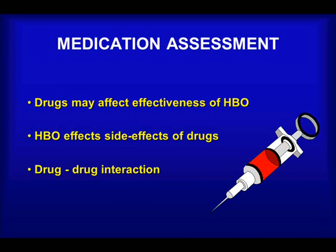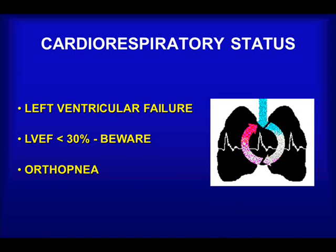Medication considerations. Medication may have a significant impact on HBO therapy. There are a range of decongestants that may interfere with circulation. Anticancer agents may even precipitate pulmonary fibrosis or cardiac toxicity. Accordingly, this is an important part of the assessment, and one needs to be familiar with drug-drug interactions with HBO and to look for them. Lastly, cardiorespiratory status. Patients with cardiorespiratory compromise may be at risk of decompensating during HBO. Left ventricular failure may progress into pulmonary edema as a result of HBO. Patients with left ventricular ejection fractions below 30% are certainly potentially at risk. Patients with orthopnea may also not be treatable in small monoplace facilities.